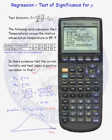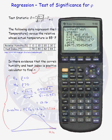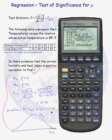If we had used LinReg T-Test directly, we would arrive at the same steps as before, knowing the test statistic and p-value without intermediate calculations. Always conclude any test of significance with a conclusion in English: because the p-value is so small, we reject the null hypothesis that the correlation between relative humidity and heat index is zero. Our test of significance for rho is complete.